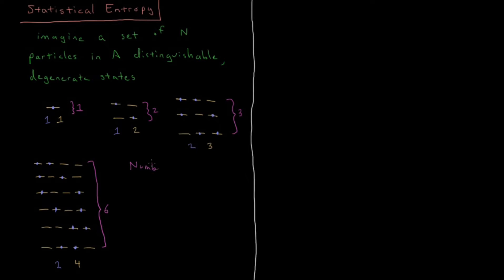So, the number of ways of arranging particles in different degenerate states, which I'm going to call W, is going to equal our number of particles choose number of states A. So this would be N choose A.